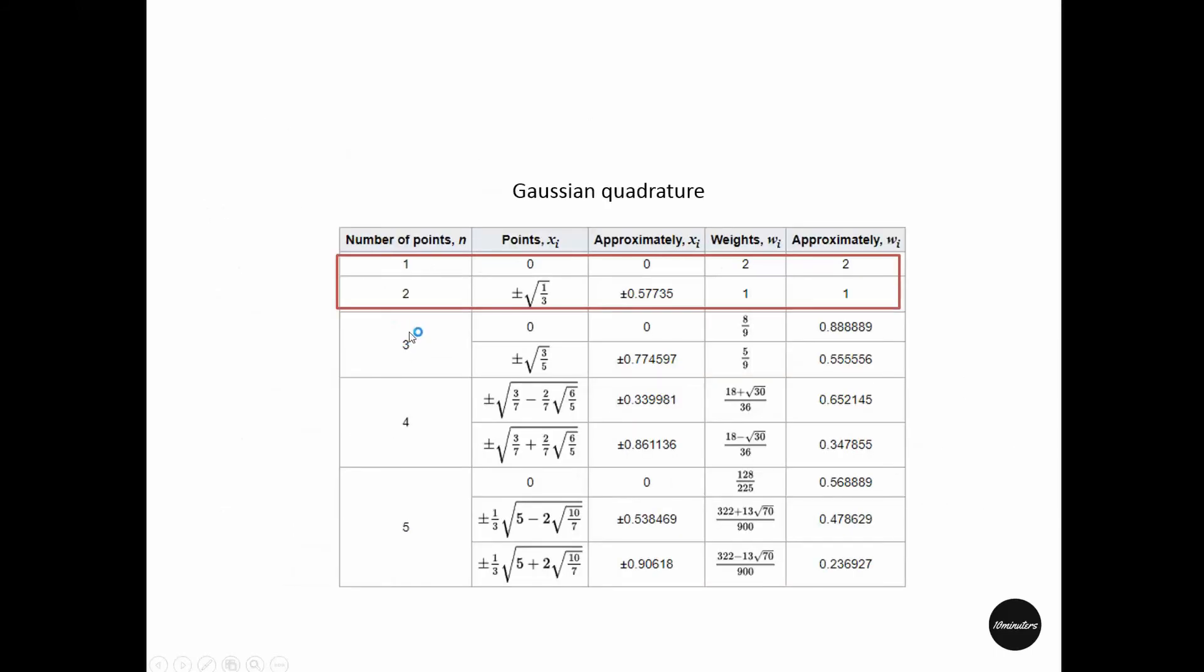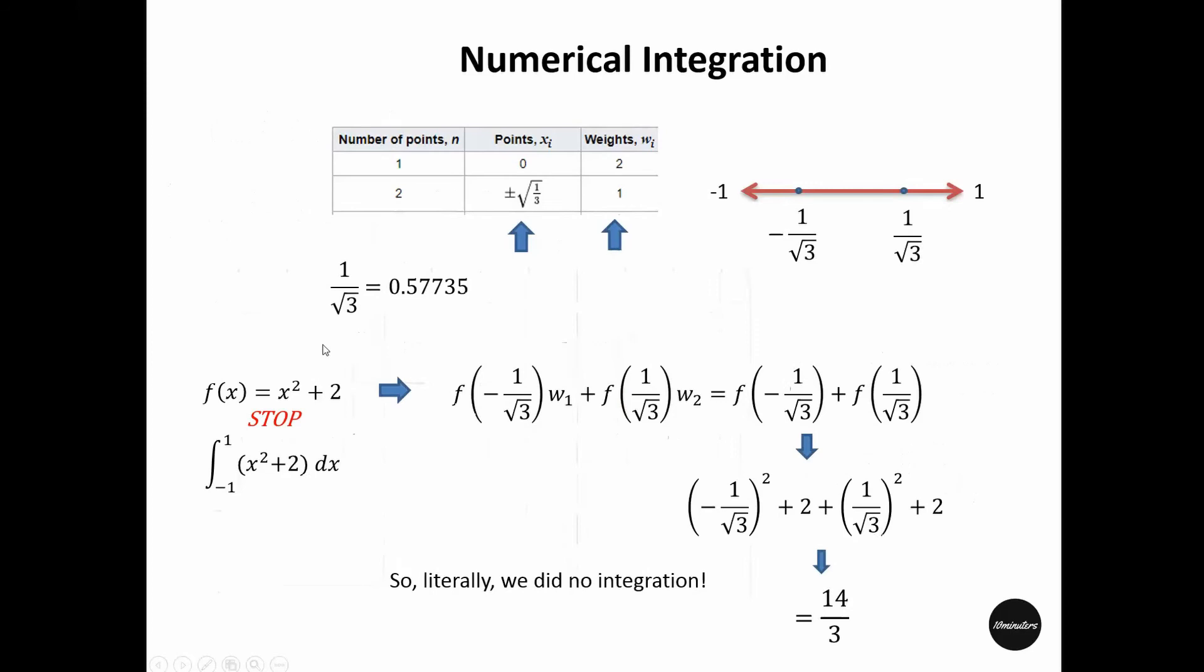We can also use more than two points. For example, if you select three points, then you have to evaluate the function at three different points: 0, plus root over 3 by 5, and minus root over 3 by 5. And also, you have to multiply whatever you get by evaluating the function with certain weights. And similarly, you can do for four points and five points. Whichever you choose, the procedure is same as we have shown in this example.